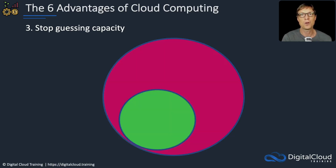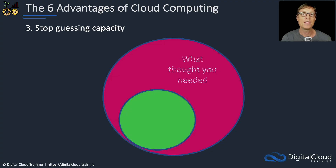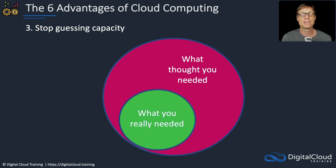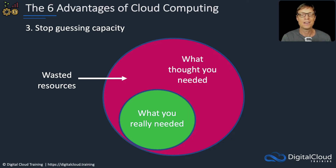The third benefit is to stop guessing capacity. When planning a new workload, you often have an idea of the processing power and storage space you need. But in reality, once you've deployed, you often find you need much less — meaning a lot of wasted resources. Having worked as a consultant, I'd see this in every single customer. With the cloud, we just don't have this problem because we can adjust our capacity based on actual demand.